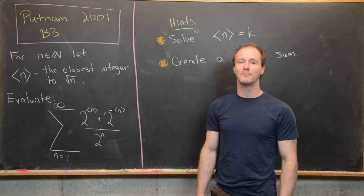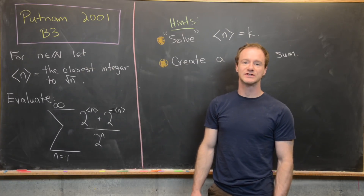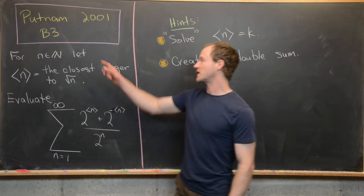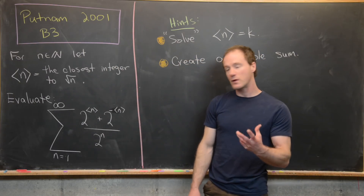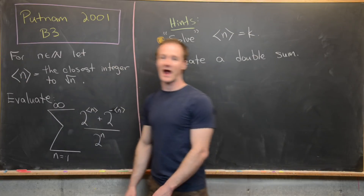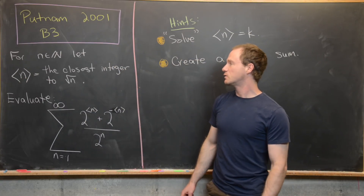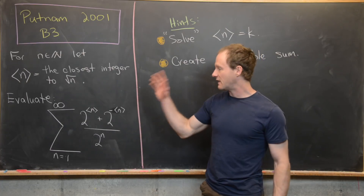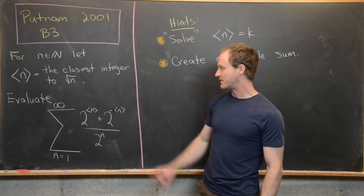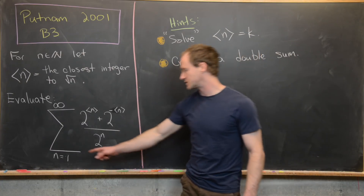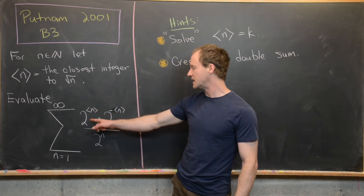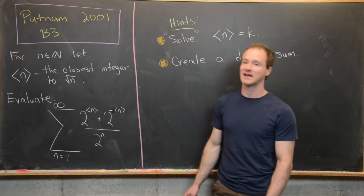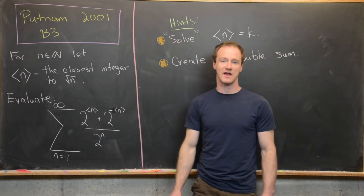Here we're going to look at a solution to problem B3 from the 2001 Putnam exam. For each natural number n, we define the angle bracket n to be the closest integer to the square root of n. Our goal is to evaluate the infinite sum: the sum from n equals 1 to infinity of 2 to the angle bracket n plus 2 to the minus angle bracket n, all over 2 to the n.